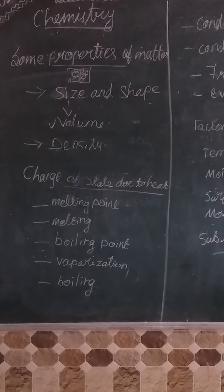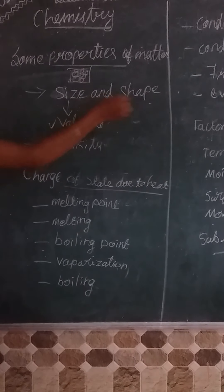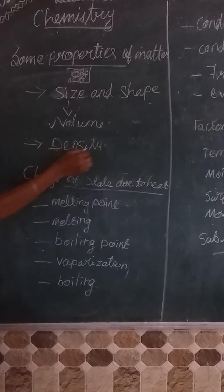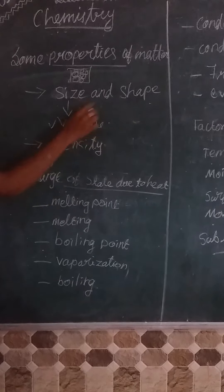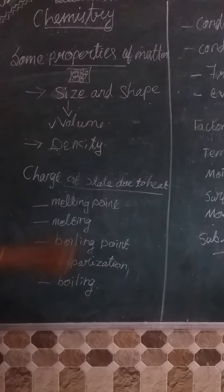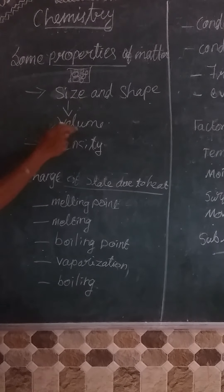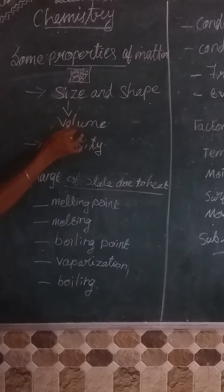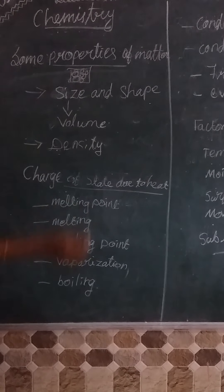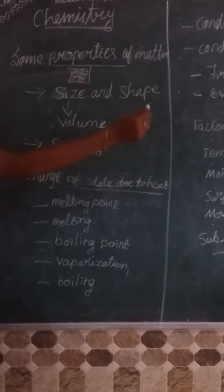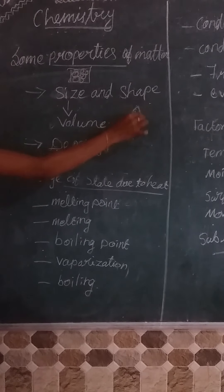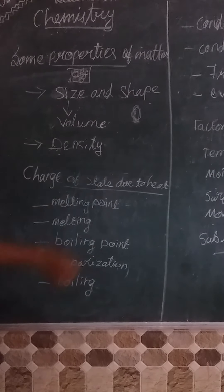First, see the properties of matter: size, shape, and density — in matters from solids to gases. What is size? That is the volume. What is volume? Space — the space of the matter. I kept a chalk here, so how much space it will occupy — this much space it will occupy. This is called the volume.